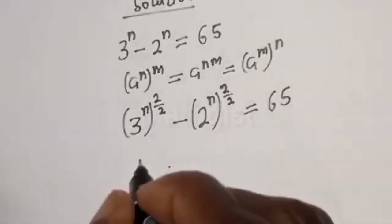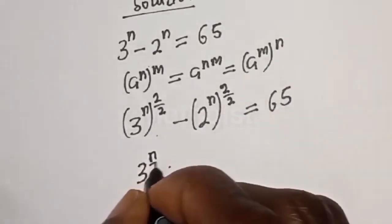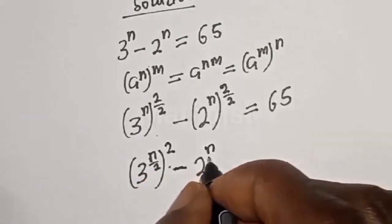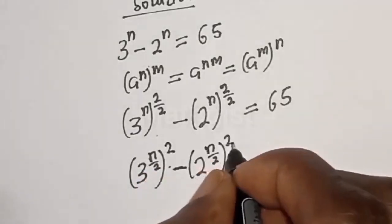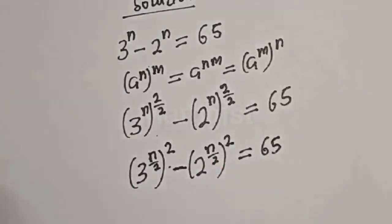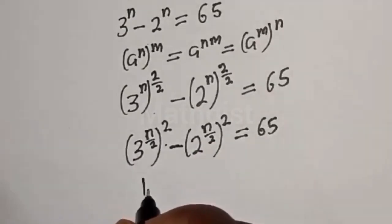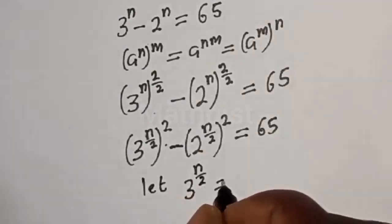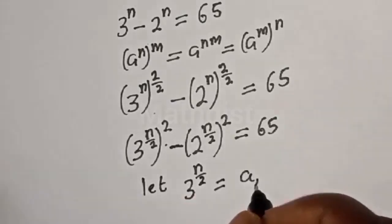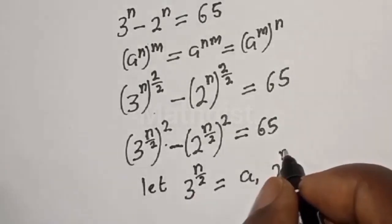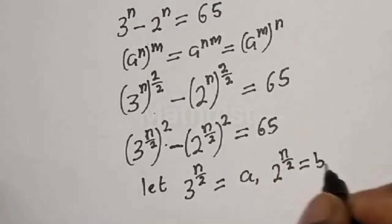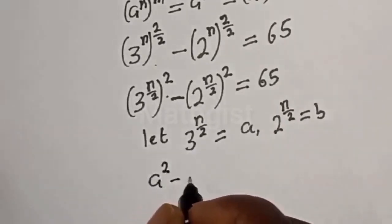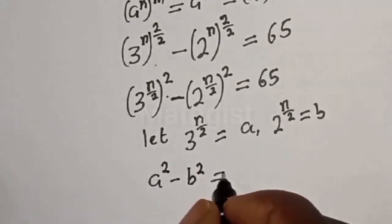Then from this rule, we have 3 raised to power n over 2, squared, minus 2 raised to power n over 2, squared, equal to 65. Let A equal 3 raised to power n over 2, and B equal 2 raised to power n over 2. This gives us A squared minus B squared is equal to 65.